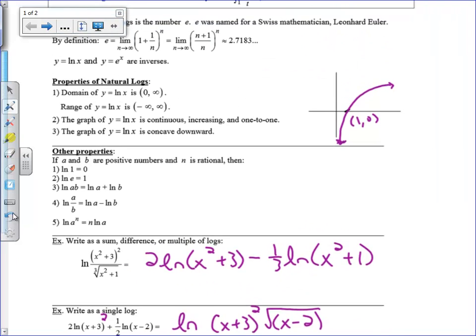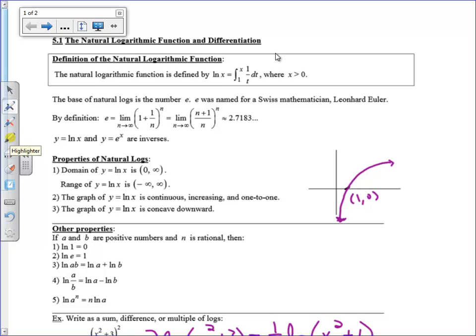Alright, so because of the fundamental theorem of calculus, let's see if we can't find the derivative of the natural log of x. Let's come up here to our definition and let's find the derivative of natural log of x. That's what we're doing today. That would be the derivative of the integral from 1 to x of 1 over t dt. And we learned yesterday how to deal with this. What is the derivative of an integral?